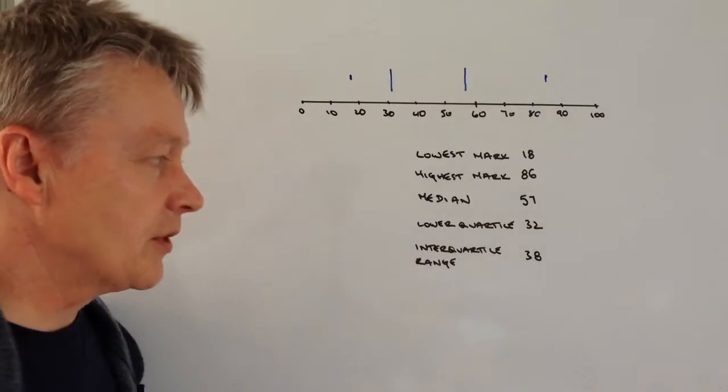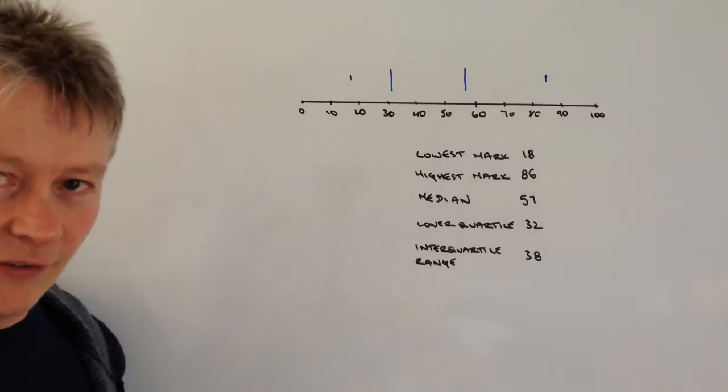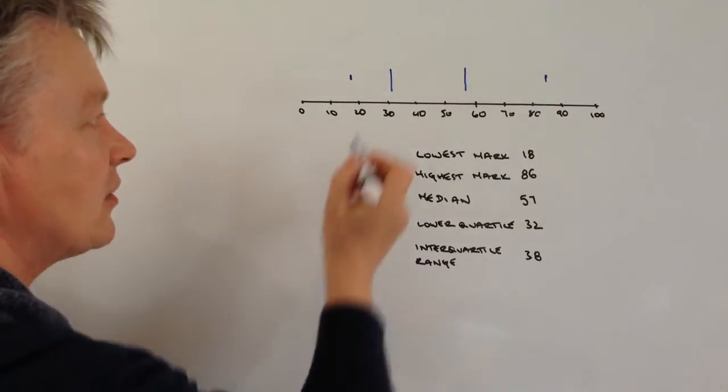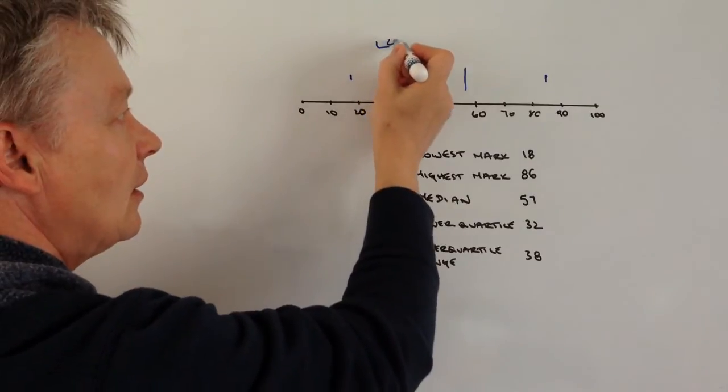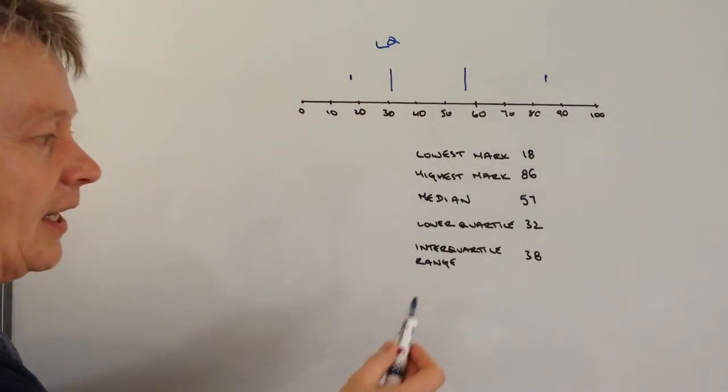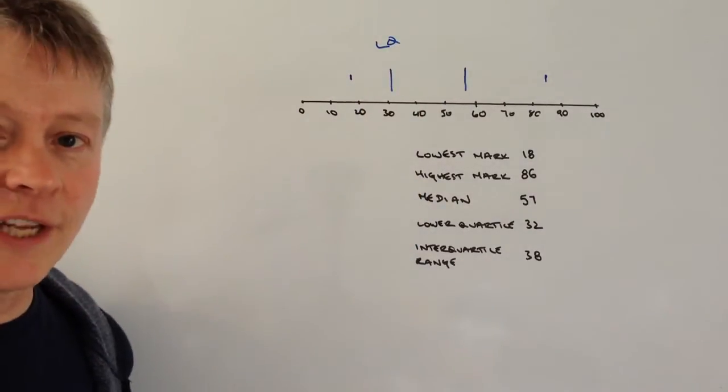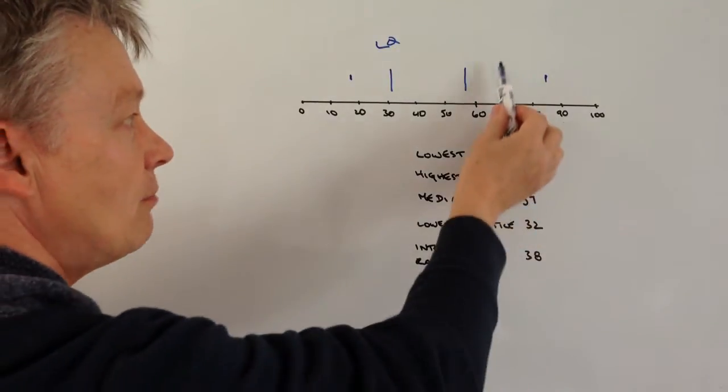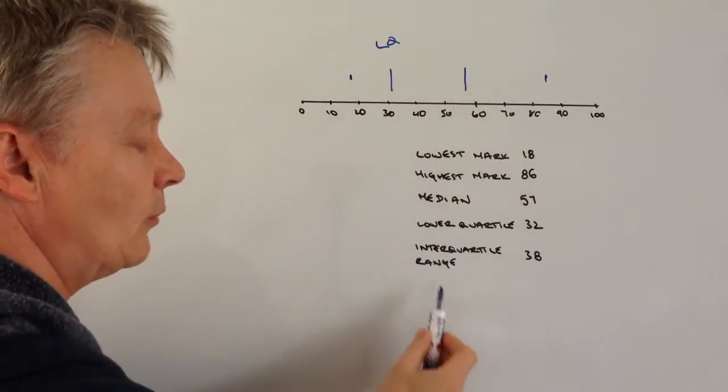And then finally, the interquartile range. Now, you've got to be a little bit careful with this, because what we've got here is the lower quartile, and we haven't actually got a reading for the upper quartile, which is a mark that's going to go around about here.